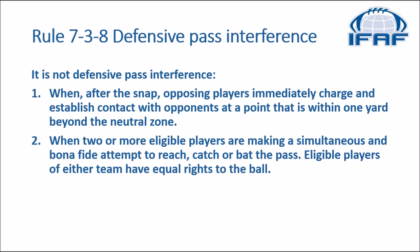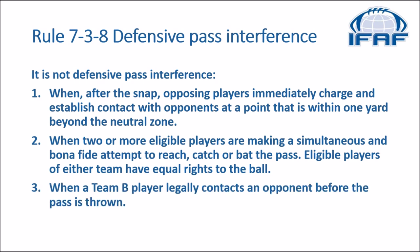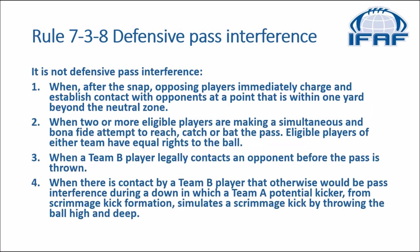Two, when two or more eligible players are making a simultaneous and bona fide attempt to reach, catch, or bat the pass — eligible players of either team have equal rights to the ball. Three, when a team B player legally contacts an opponent before the pass is thrown. And four, when there is contact by a team B player that otherwise would be pass interference during a down in which a teammate potential kicker from scrimmage kick formation simulates a scrimmage kick by throwing the ball high and deep.